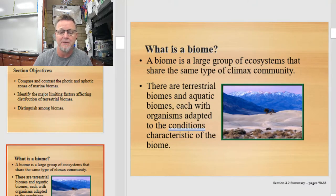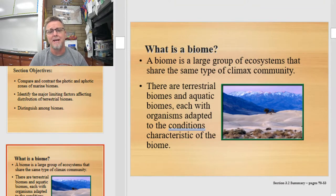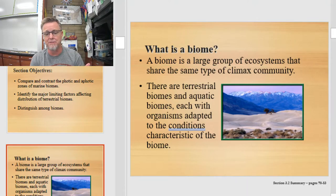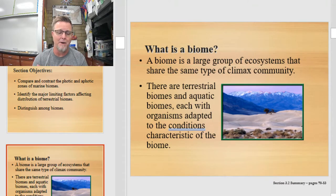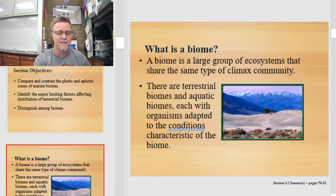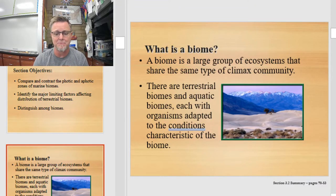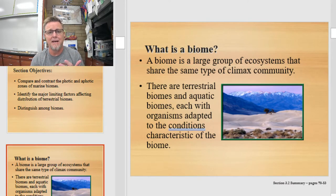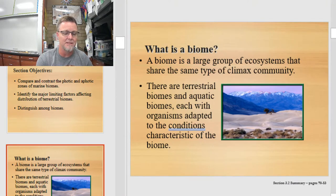A biome is a large group of ecosystems that share the same type of climax community, and they're divided up into two grand divisions: a terrestrial division and an aquatic division. The word terrestrial means land, and aquatic means water. The organisms that live within each of these areas are specifically adapted to life in these areas, and we need to understand the adaptations that they have and what those conditions are.